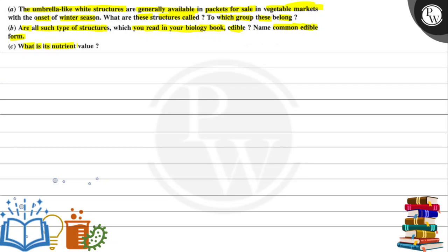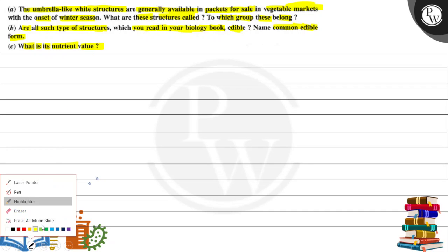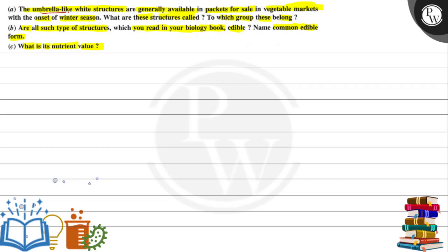An umbrella-like structure generally available for sale in the vegetable market in winter season — we need to identify which structure we are talking about and which group it belongs to. We also need to find the common edible form and its nutritive value. The key concept here is fungi.